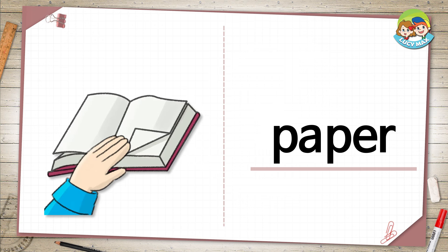Paper. The white thing in the book is paper. The paper in the book is folded. Do you know what paper is made of? It is made of wood.